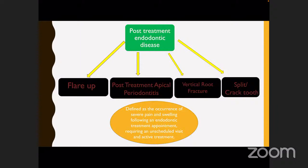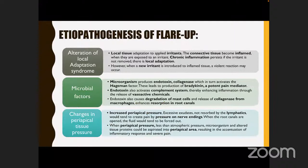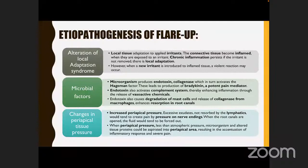The etiopathogenesis of a flare-up includes: first, alteration of the local adaptation syndrome. The body tries to adapt to any irritant or stimuli — this is local adaptation. However, when a new irritant is introduced, the body identifies it as a new threat, leading to a violent inflammatory reaction. This can lead to a flare-up.